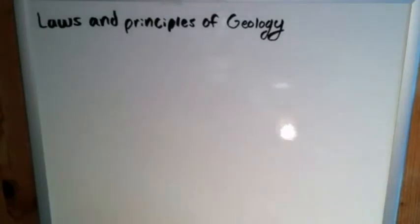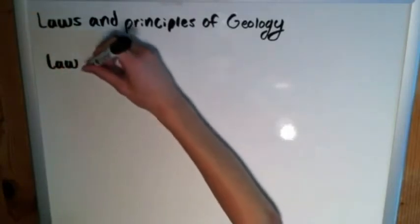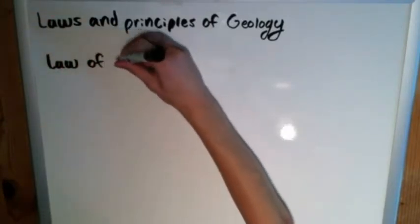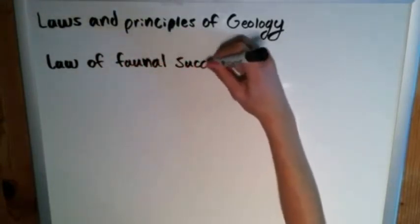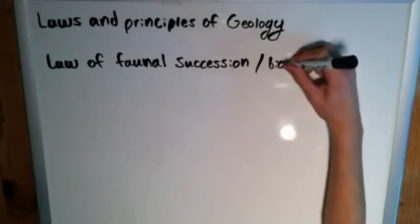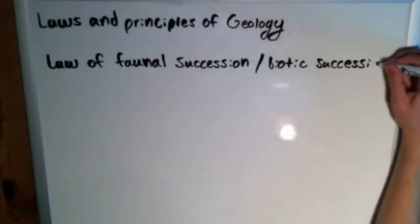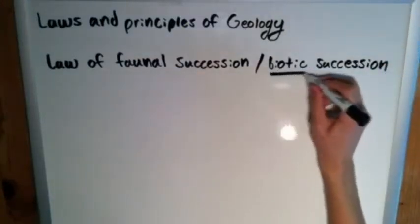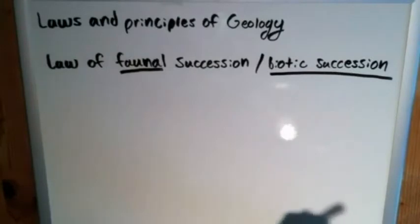Now, the next one we have was also named by the man William Smith, or Strata Smith, and it is called the Law of Faunal Succession, or Biotic Succession. And as the name implies, we are getting into fossils here. It was originally by most called Faunal Succession, but it was later, more people now call it Biotic Succession, or it is more properly named Biotic Succession, because faunal, as you may be aware, refers simply to animals. Meanwhile, with Biotic, we can include plants in there, the flora.